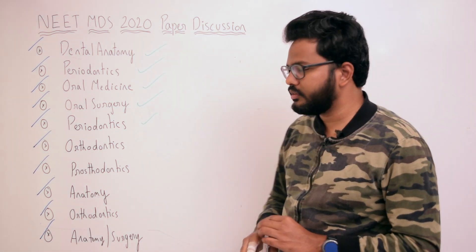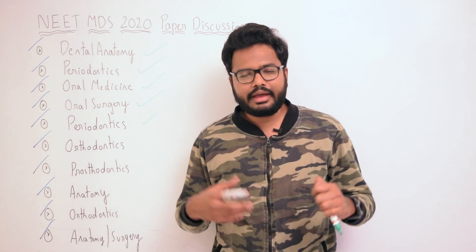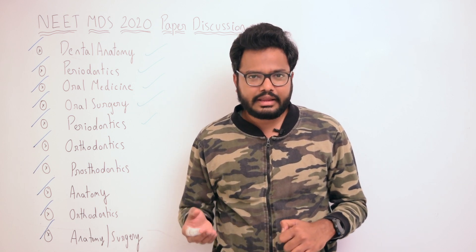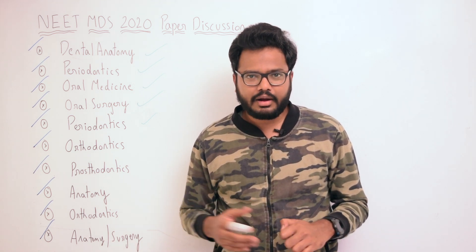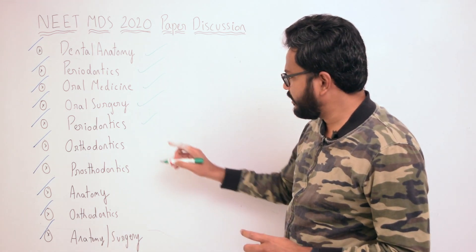The next question is from implantology. The image shows a dental implant ratchet and torque wrench. Pre-calibrated torque wrenches are used in implantology to accurately set the tightening force to the abutment screw. For additional information, I'll share a link in the description part of the video.